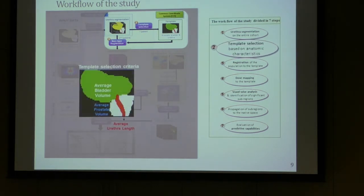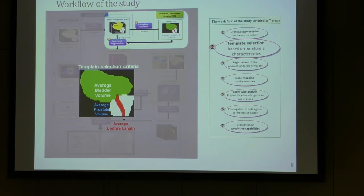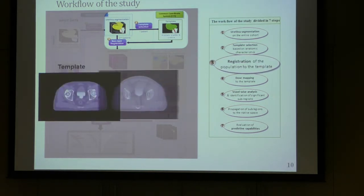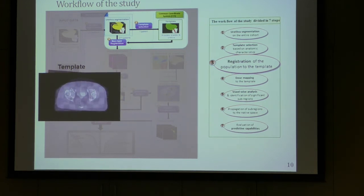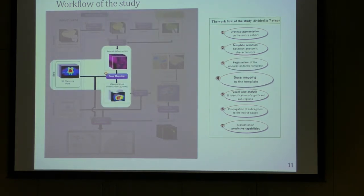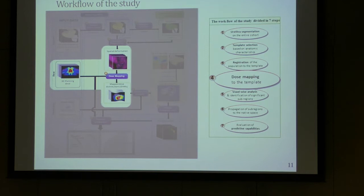The next step is registration — we need to register all patients in a common coordinate system. To do that, we select a template patient, which for us was the average patient: the patient with the average prostate volume, bladder volume, and urethra length. For registration, we first align the prostate images, then deform the image to produce a deformation field, which is applied to the dose distribution to propagate all dose distributions to a common coordinate system, enabling subsequent analysis.